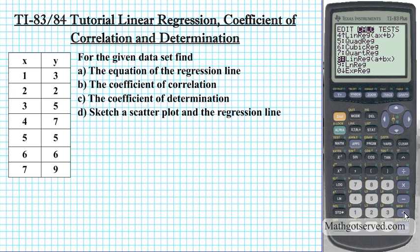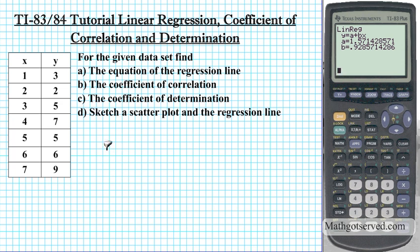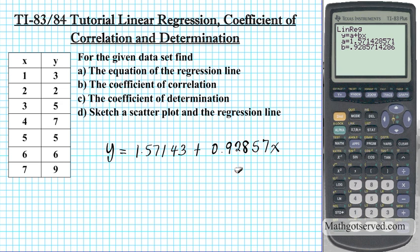Let's highlight that option. Press enter — linear regression — press enter again, and it gives me these values. So the equation of our linear regression for option A is: Y equals A, which is 1.57143, plus B times X. Notice the more decimal points you have, the more accurate the equation of your regression line will be.